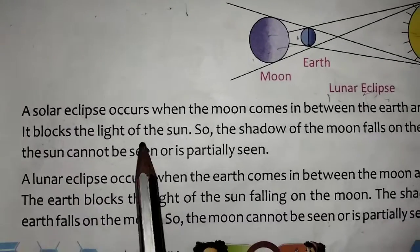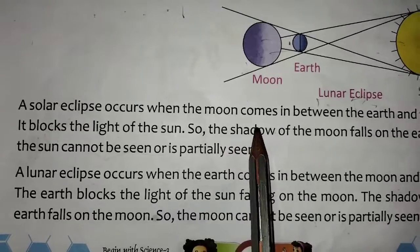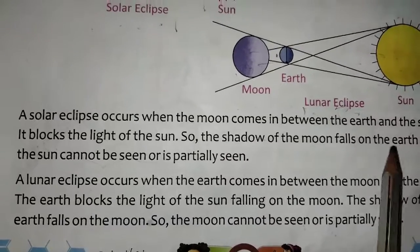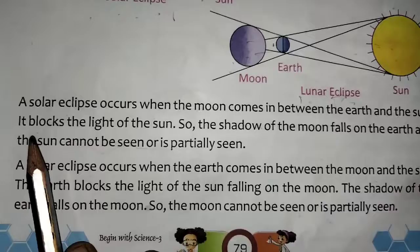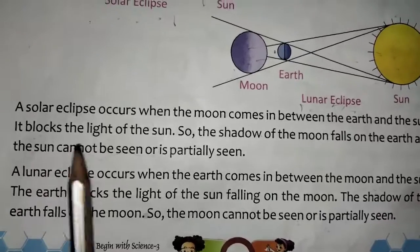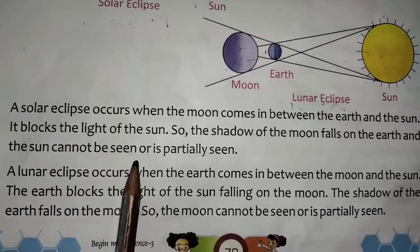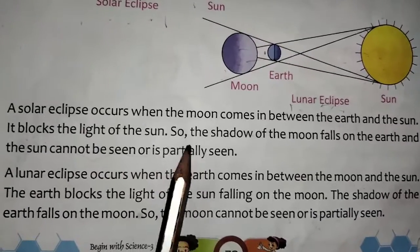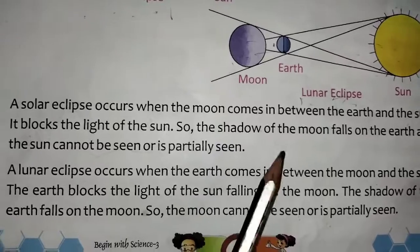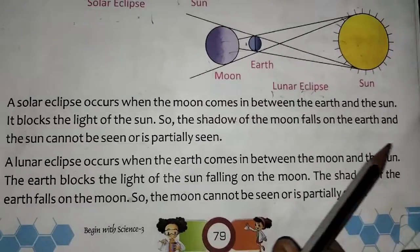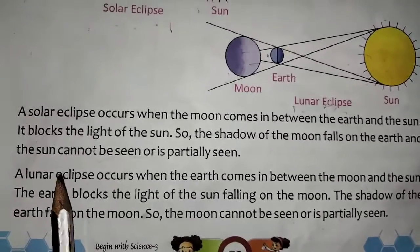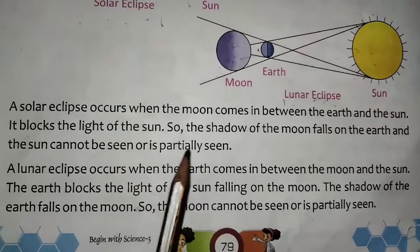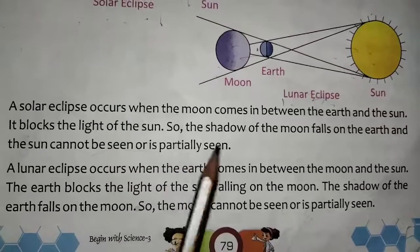A solar eclipse occurs when the moon comes in between the earth and the sun. It blocks the light of the sun. The shadow of the moon falls on the earth and the sun cannot be seen, or it is partially seen.